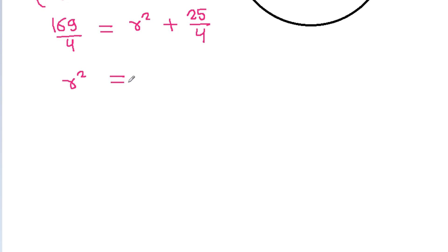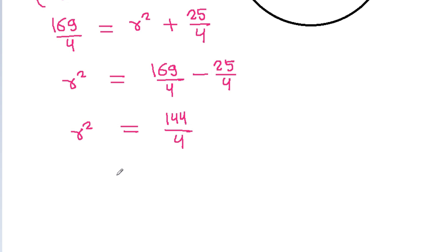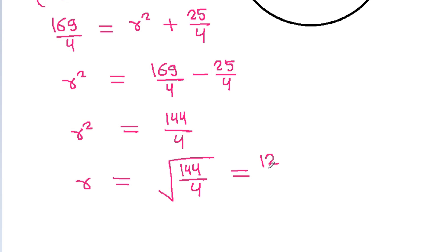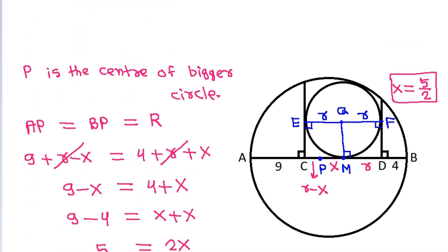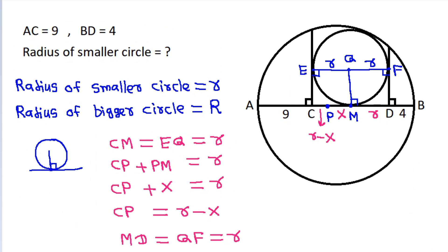Small r squared will be equal to 169 by 4 minus 25 by 4, which gives root of 144 by 4. That is equal to 12 by 2, and it is 6. So the radius of the smaller circle is 6.